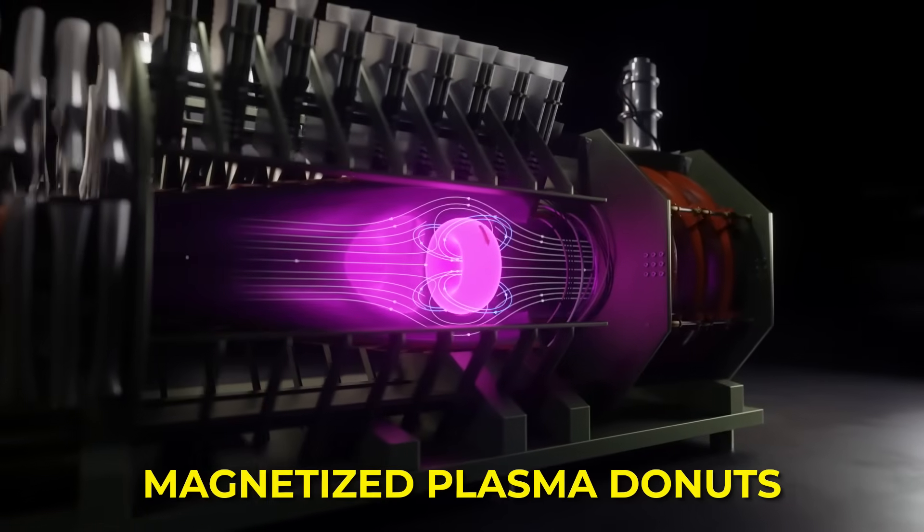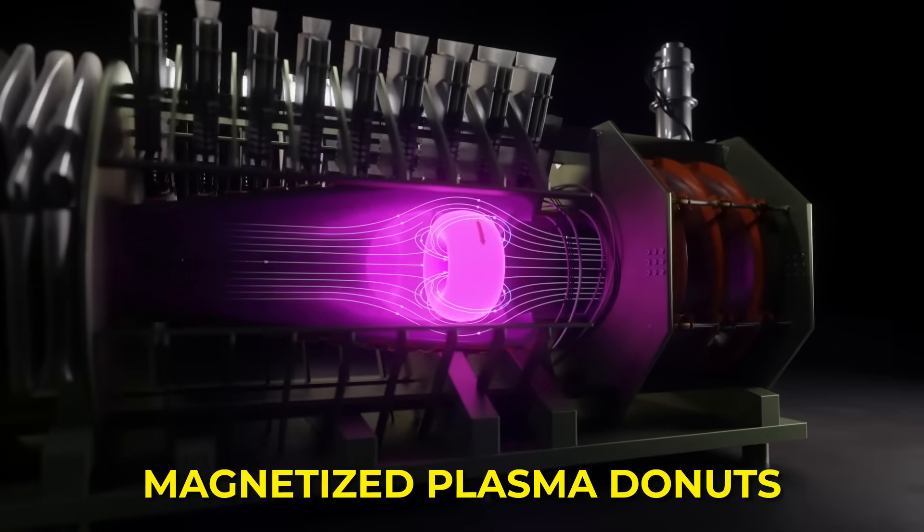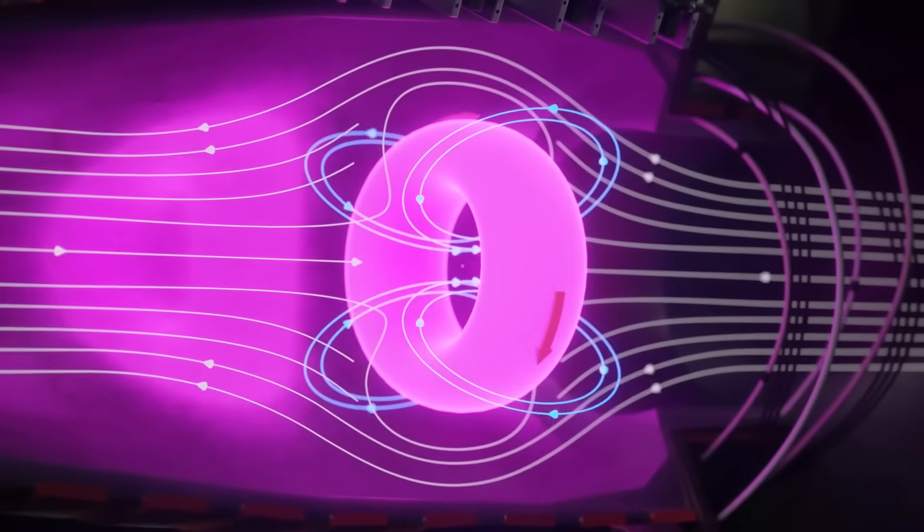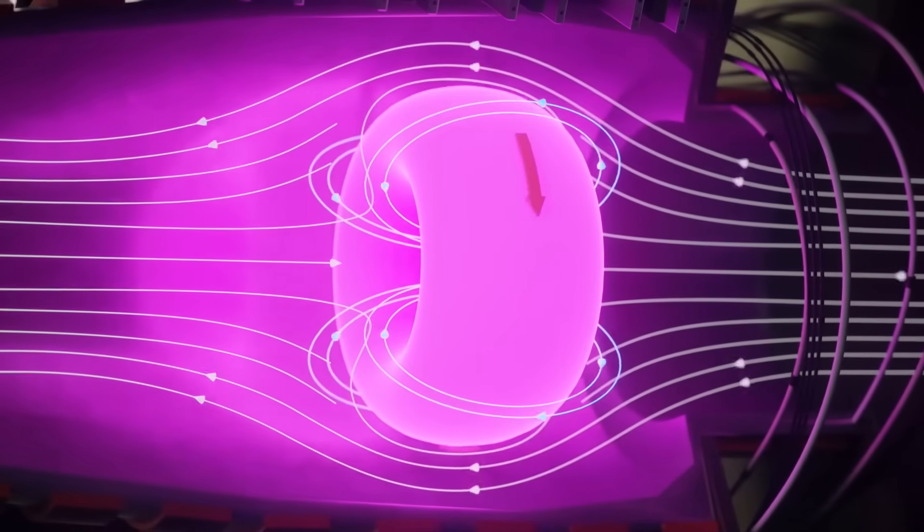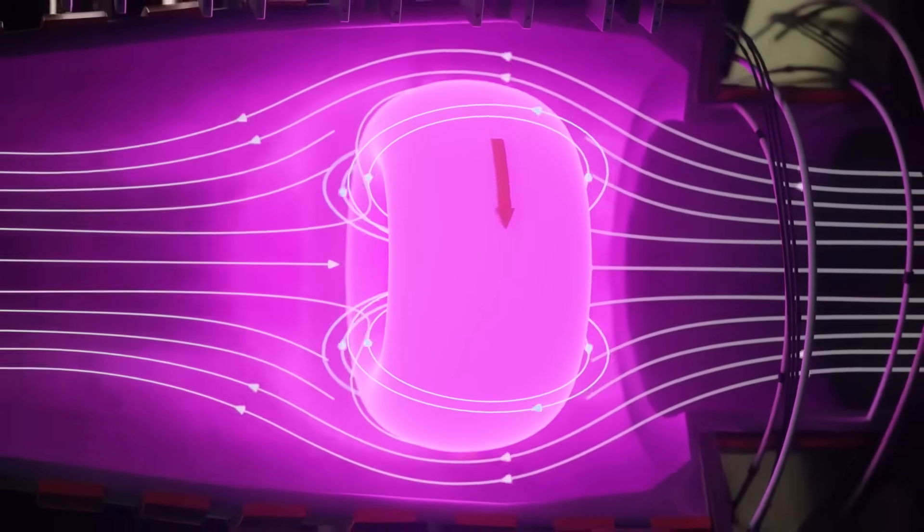Think of them as magnetized plasma donuts that carry their own internal field. Helion makes them large at first, so they can trap as much magnetic flux as possible. Then, electromagnets push them inward.